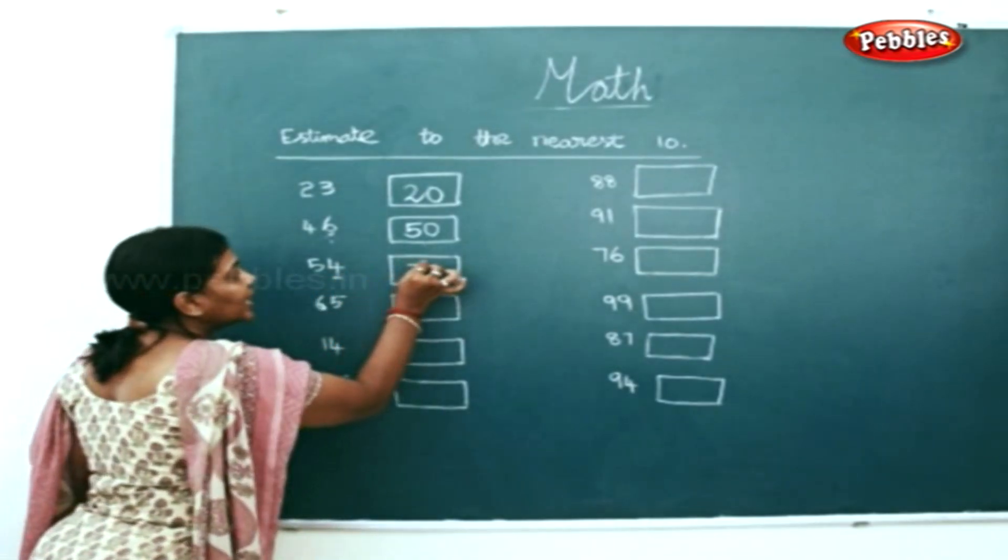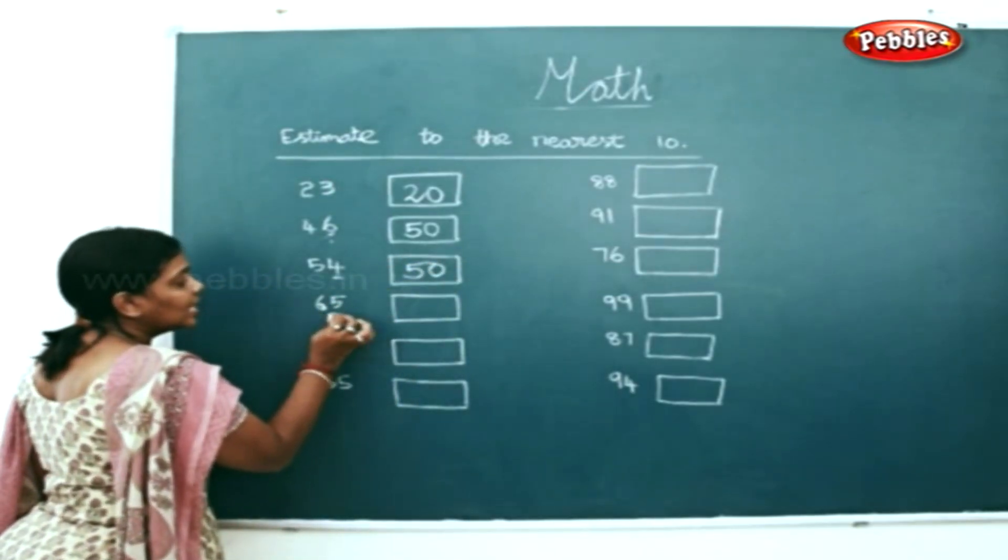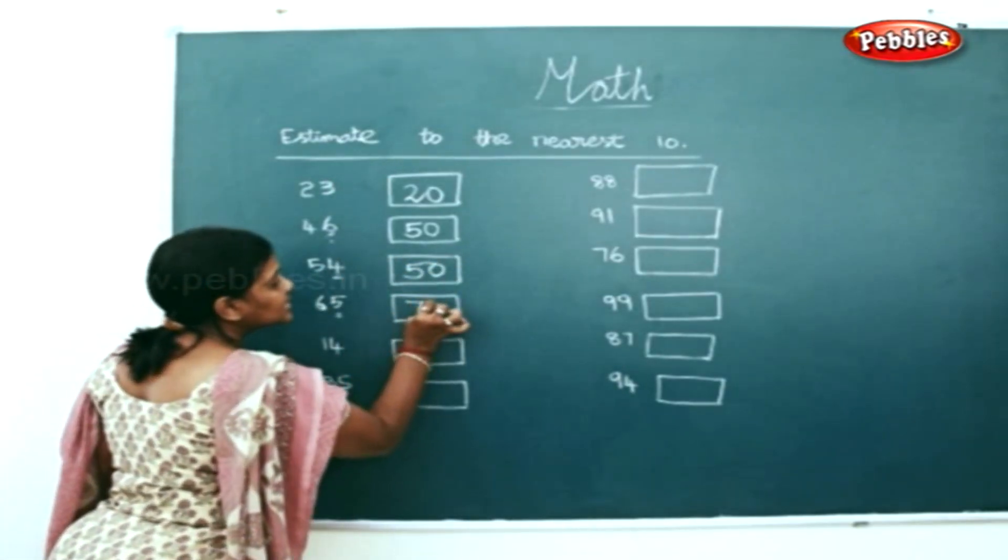54. It's 4, so we will write 50 here. 65. The next biggest number is 70.